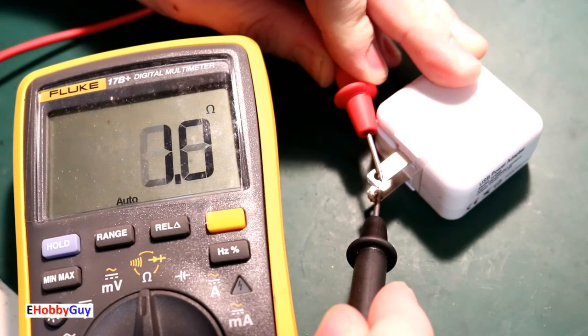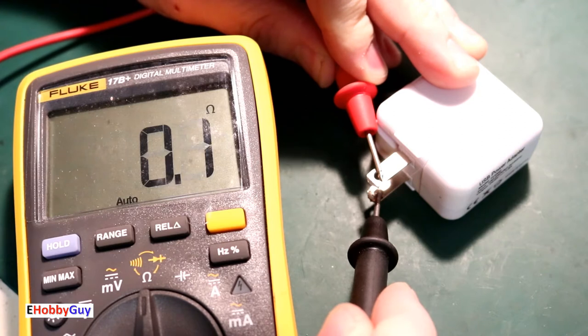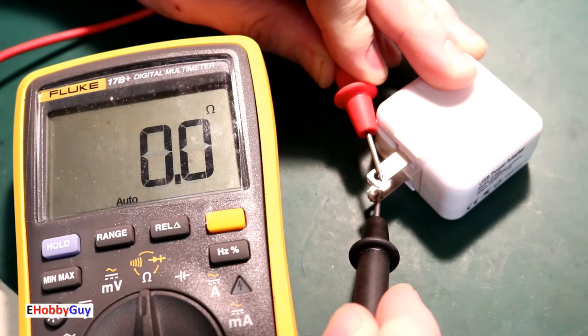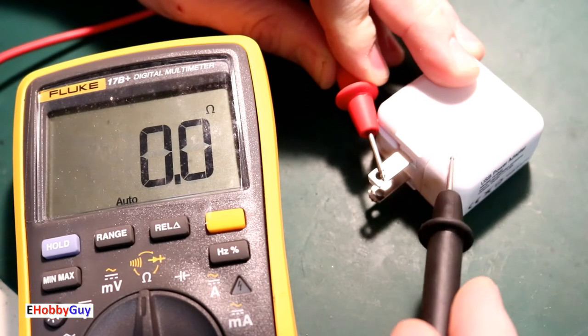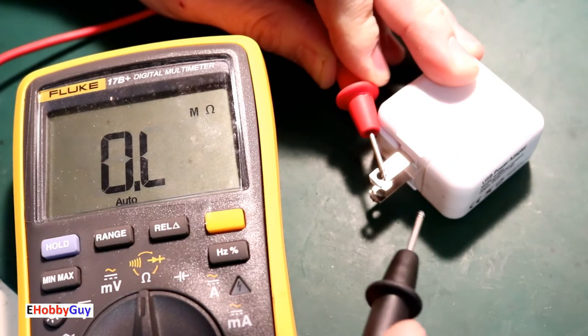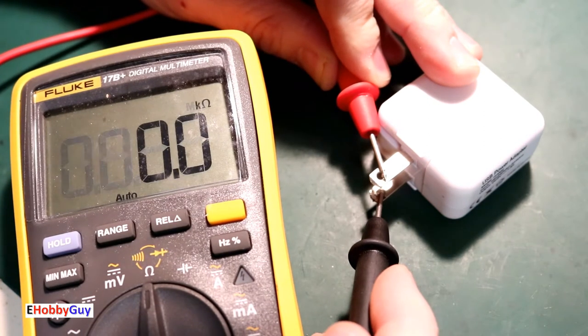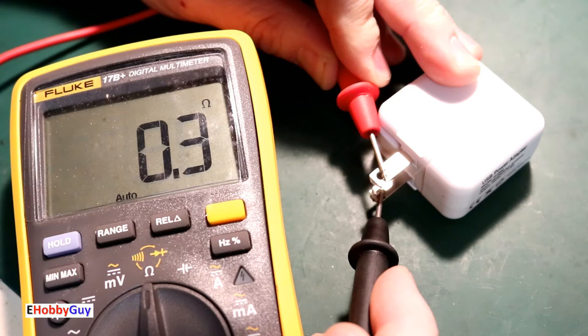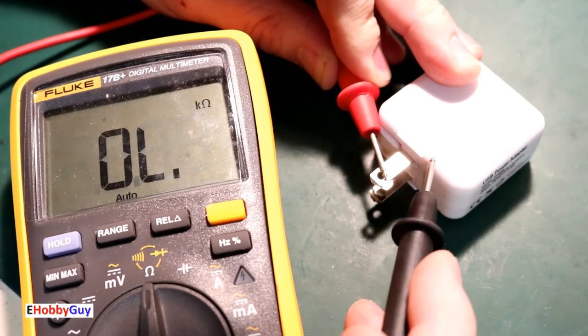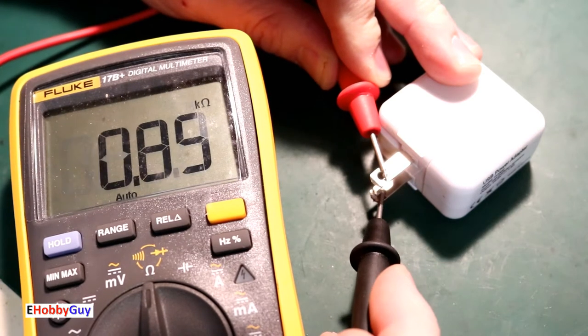And yes, we can see we have a direct short here, 0.1 ohms. So definitely the problem is within this and not somewhere else, not within the outlets it was plugged into or the receptacles. I'm going to throw it on another charger just as a reference as to what it should be.